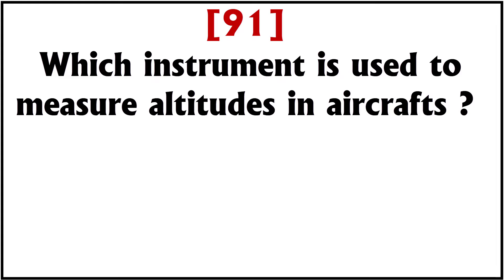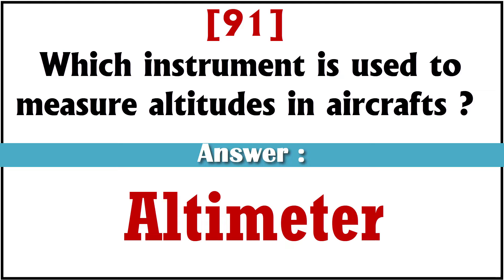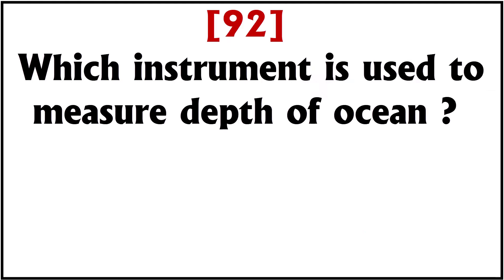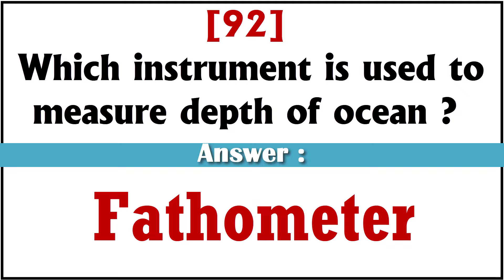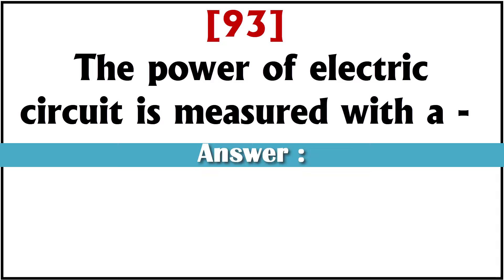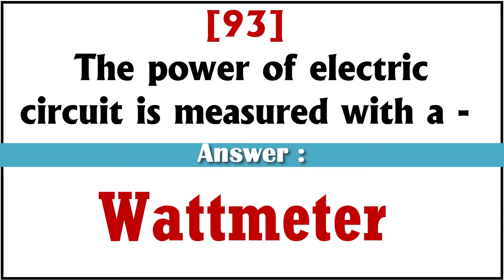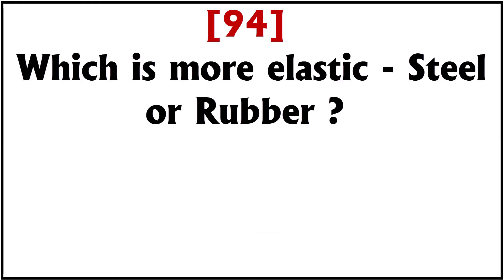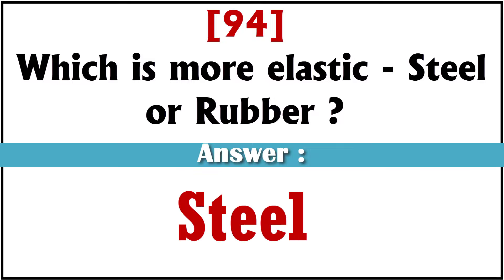Which instrument is used to measure altitude in aircraft? Answer: Altimeter. Which instrument is used to measure the depth of the ocean? Answer: Photometer. The power of an electric circuit is measured with a? Answer: Wattmeter. Which is more elastic, steel or rubber? Answer: Steel.